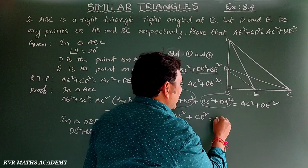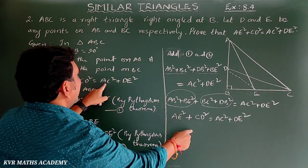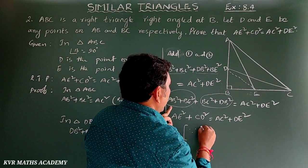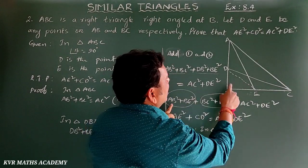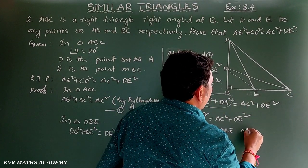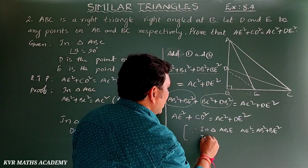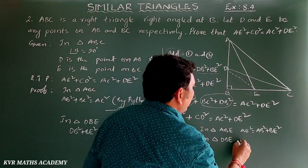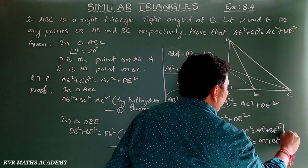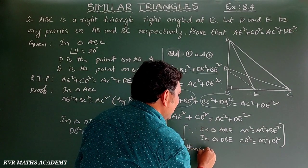So that is only enough for the proof. AE² + CD² = AC² + DE². In triangle ABE, AE² = AB² + BE². In triangle DBE — wait, in triangle DBC — CD² = DB² + BC². Hence proved.